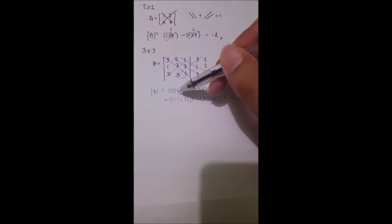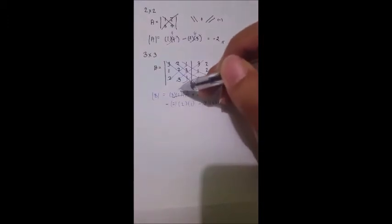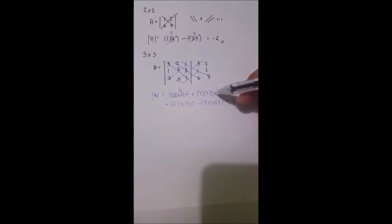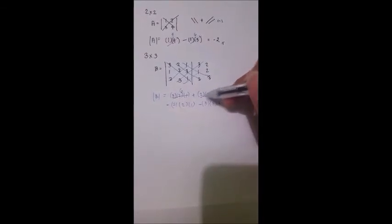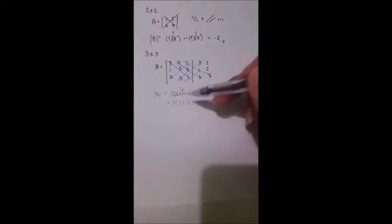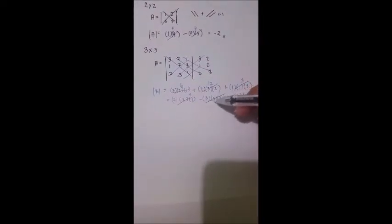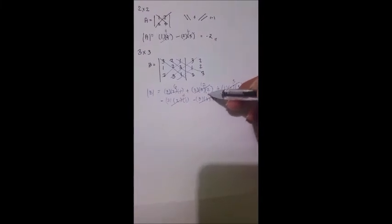To simplify: 3 times 2 times 1, that will become 6. 2 times 3 times 2, 6 times 2, 12. That is 3. 2 times 2, 4. This is 3 times 3, 9 times 3, which is 27. And that becomes 2.